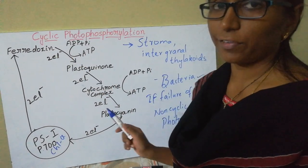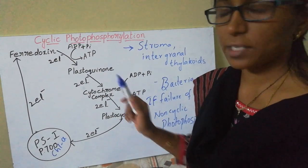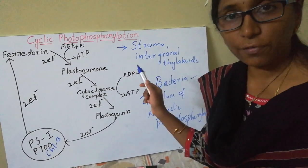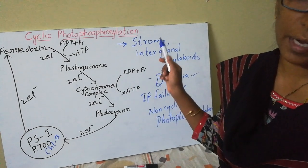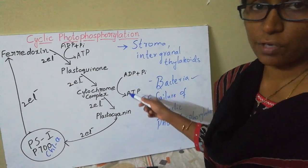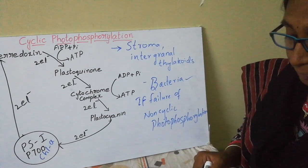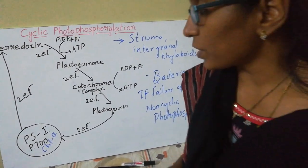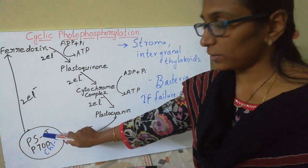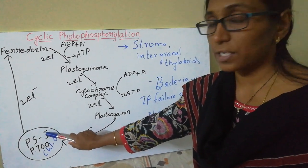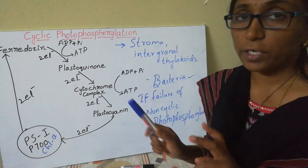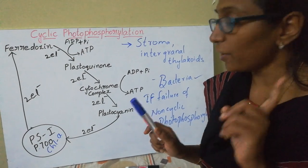The name itself says it — cyclic flow of electrons takes place in cyclic photophosphorylation. Photophosphorylation is the synthesis of ATP from ADP and inorganic phosphate during the cyclic transportation of these electrons. Cyclic photophosphorylation is involved with only Photosystem 1 — there is no involvement of Photosystem 2.